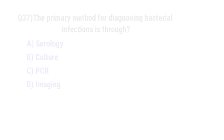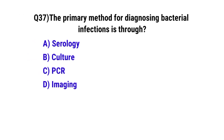Question number 37. The primary method for diagnosing a bacterial infection is. The correct option is B: culture.